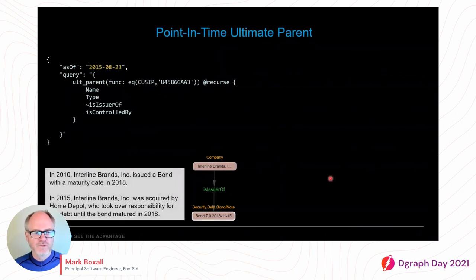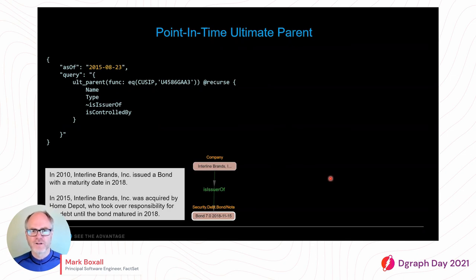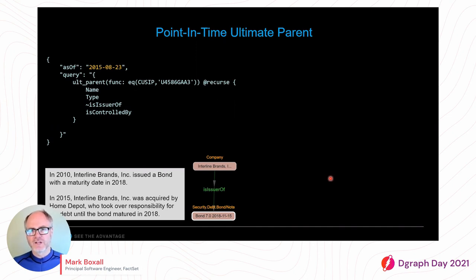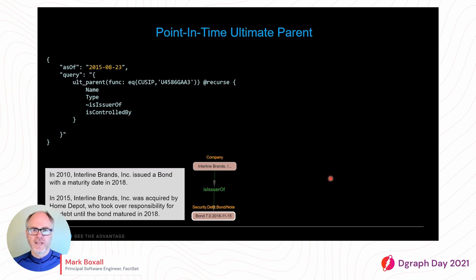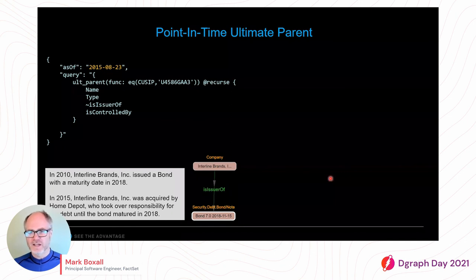Point-in-time ultimate parent — let me explain what that concept means. Quite commonly, a company might issue a bond that matures many years in the future. Before the company has had a chance to pay off all the debt, it may get acquired, and the remaining debt becomes the responsibility of the acquiring or parent company. That parent company could in turn be acquired as well, at which point the responsibility for the debt shifts once more. So really, at any point in time over the full lifetime of the bond, there could be any number of different ultimate parents responsible for the debt — and that's a question our clients like to ask.